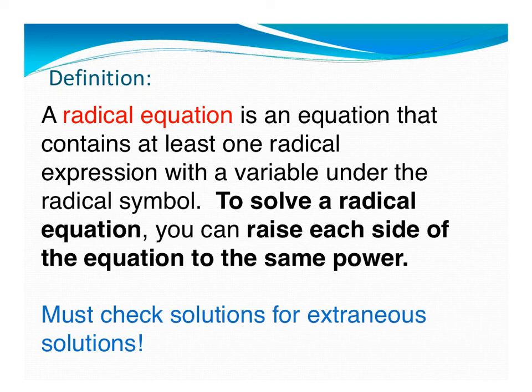If we're trying to undo a square root, you're going to square both sides. If you're trying to undo a cube root, you're going to cube both sides. If you're trying to undo a fourth root, then you need to raise both sides to the fourth power, so on and so forth. Wonderful.